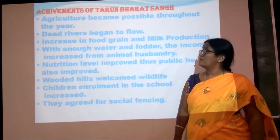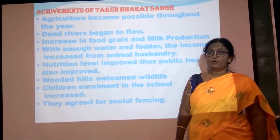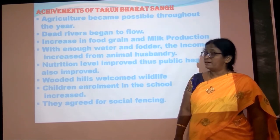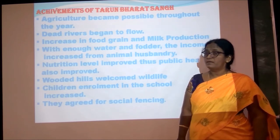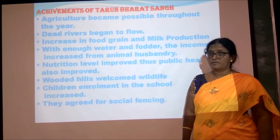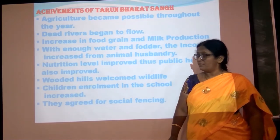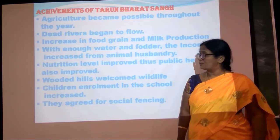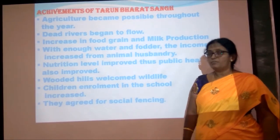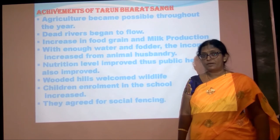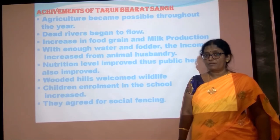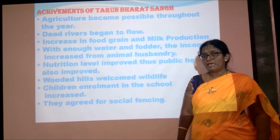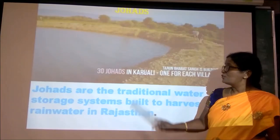Achievements of Tarun Bharat Sangh: Agriculture became possible throughout the year. Dead rivers began to flow. Increased production of food grains and milk raised the income of farmers. Nutrition level improved and public health also improved. Wooded hills welcomed wildlife. Enrollment of children in schools increased. People agreed to social fencing — fencing for the hills — to protect the land.